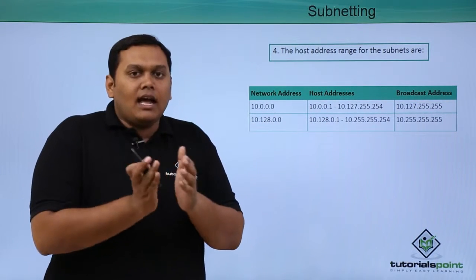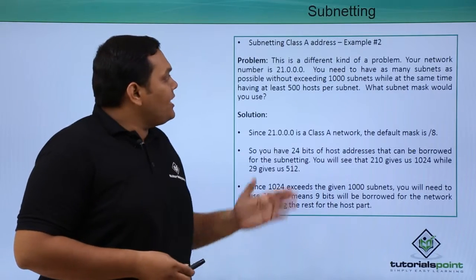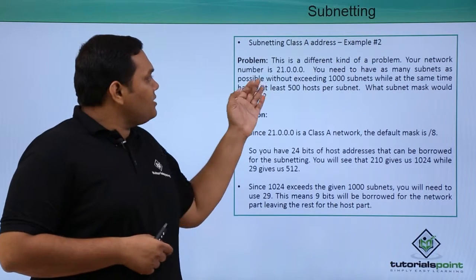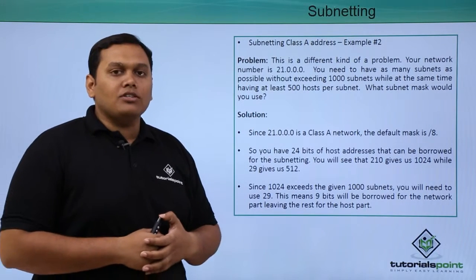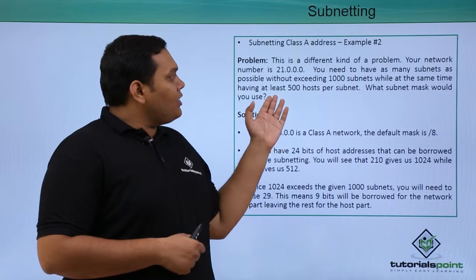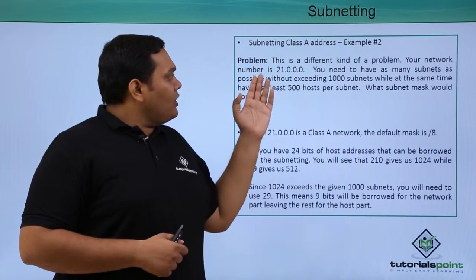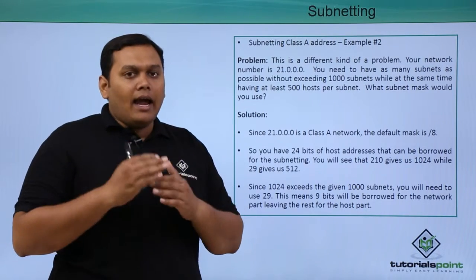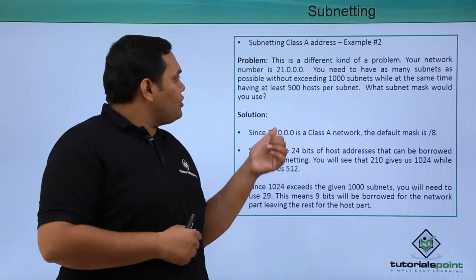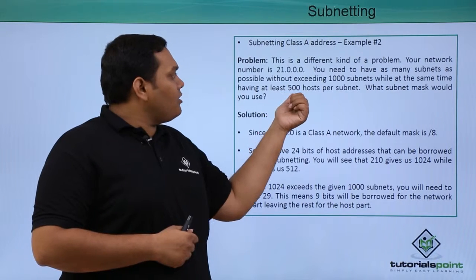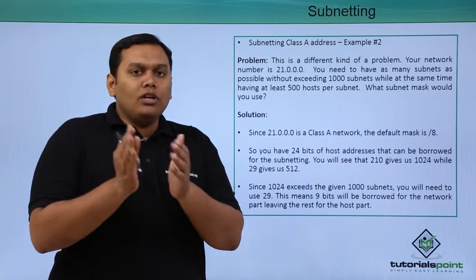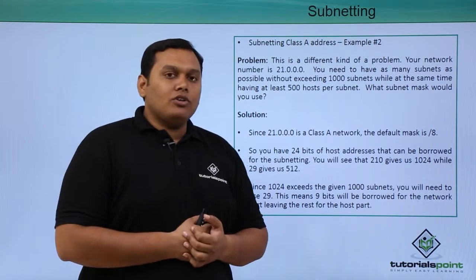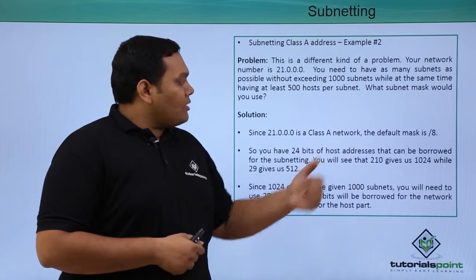Here is the example. This is a different kind of problem. Your network number is 21.0.0.0. You need to have 1000 subnets without exceeding 1000 in number, and per subnet you should have a minimum of 500 hosts. How will you perform the subnetting here?